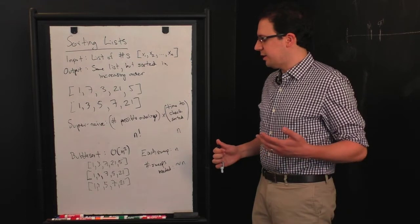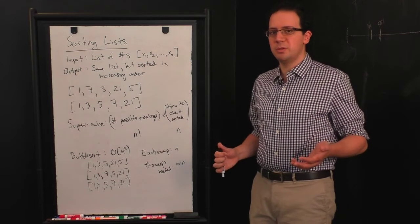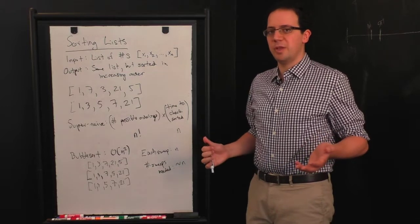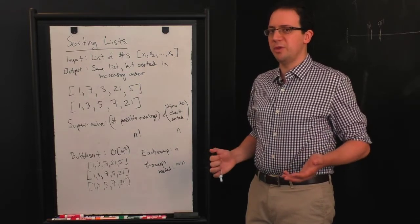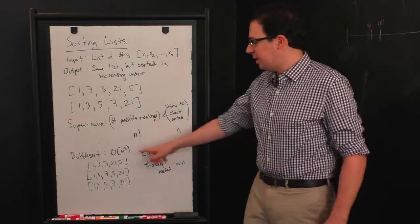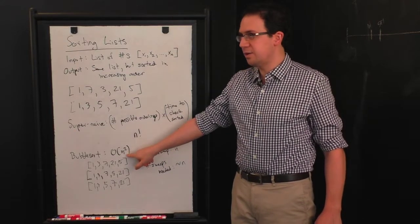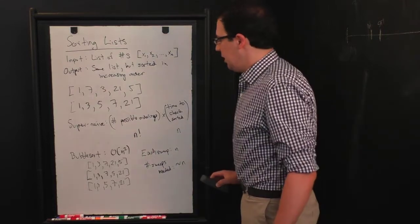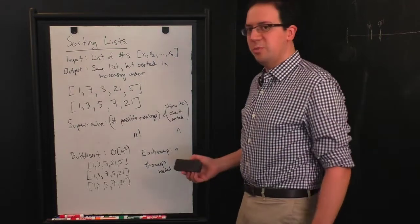But even n squared is not good enough for some applications. You can imagine if you're sorting a list of a million numbers, which is really not so unreasonable in today's data sets. I mean, I'm sure that large companies sort lists that are regularly billions or trillions of numbers. A million squared is a trillion, which starts to take, you know, serious time on your computer. Okay, so can we do better?